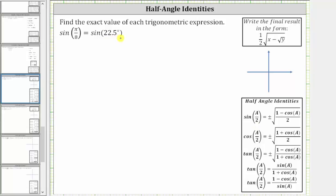22.5 times two is 45, and therefore we write the sine of 22.5 degrees as the sine of 45 degrees divided by two. Notice in this form, we can easily see the angle a is 45 degrees.